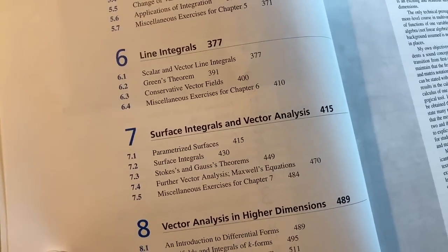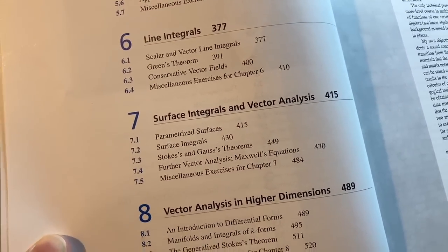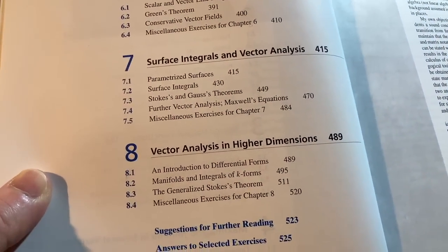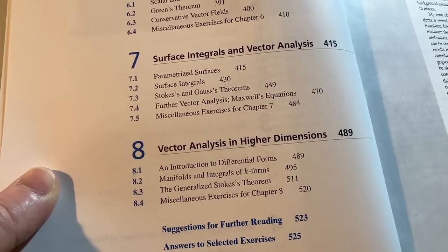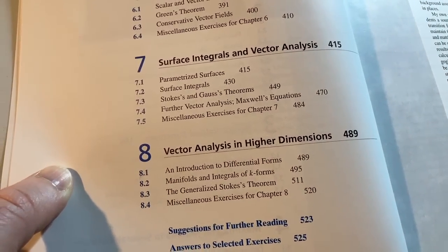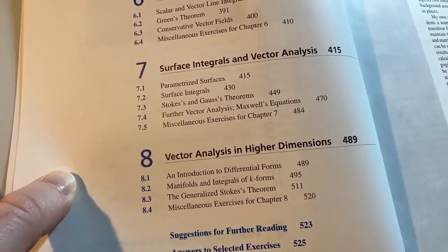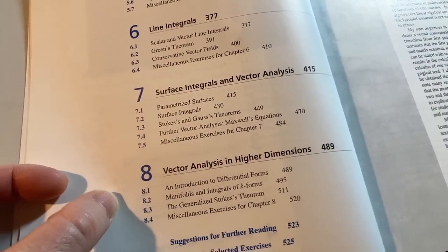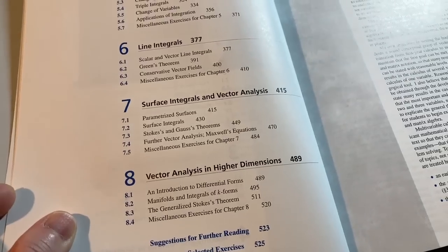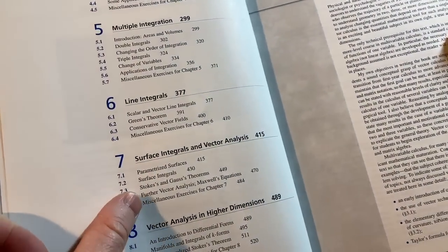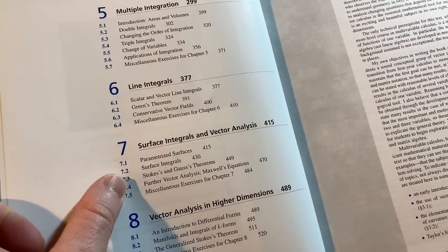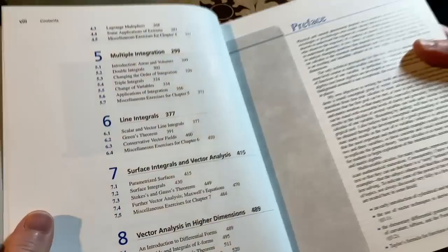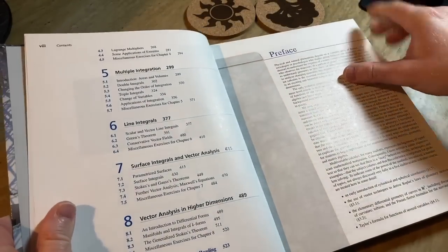Surface integrals and vector analysis. And then eight vector analysis in higher dimensions. That's kind of nice. You're not going to see that in those other calculus books. This is a little bit extra, which it's really nice that Susan threw this in here. And you have answers to selected exercises. So most calculus courses might stop at Stokes. And that would be it. If you make it that far. Honestly, if you make it that far. A lot of calculus courses don't.